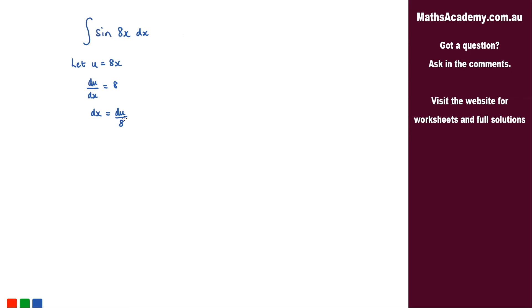Now I can go ahead and pop in all of those substitutions. So we get the integral of sine. Now instead of this 8x what we've got is u. So sine u and instead of dx, well dx is now du over 8.